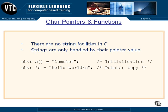These two items that you see here are very different in their initialization and in their function. This is the initialization of a character array called 'a', and it will be set at compile time to the size necessary to store the word and a zero — a null — at the end to terminate the string. That will be put into memory so that it can be worked on and modified. This is a character pointer called 's', and the star gives us the pointer, and it will be set equal to the address of this 'H'. This is a pointer copy — the string will be put into a constant memory location that we are generally not allowed to mess with, and the address of this 'H' will be put into 's'.